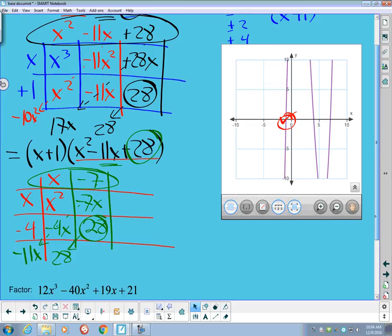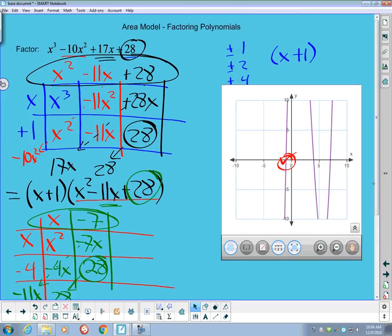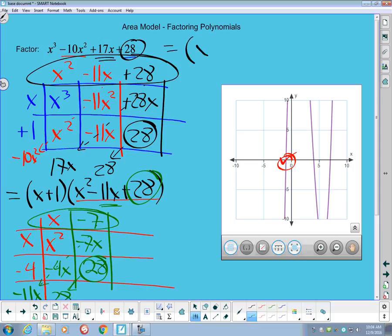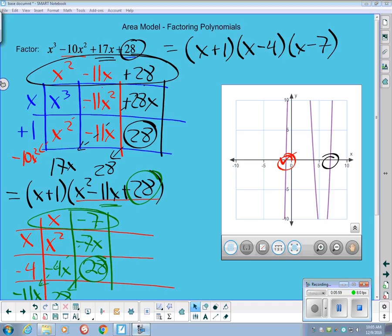So my complete factored form, let me get some of this stuff out of the way here. My complete factored form, then I pulled out an x plus 1. And I pulled out an x minus 4, and was left with an x minus 7. So it verifies that this piece over here was crossing at 7. And that's my complete factored form for that first one.